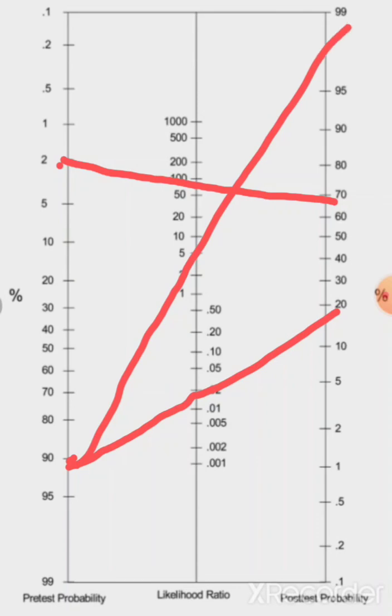You see that? So what you want to be doing is ruling up and down. Rarely can we rule, particularly musculoskeletal things, out or in. But we can rule up or down our post-test probabilities. And if a test is not going to change your post-test probability, then there's no reason to do it.